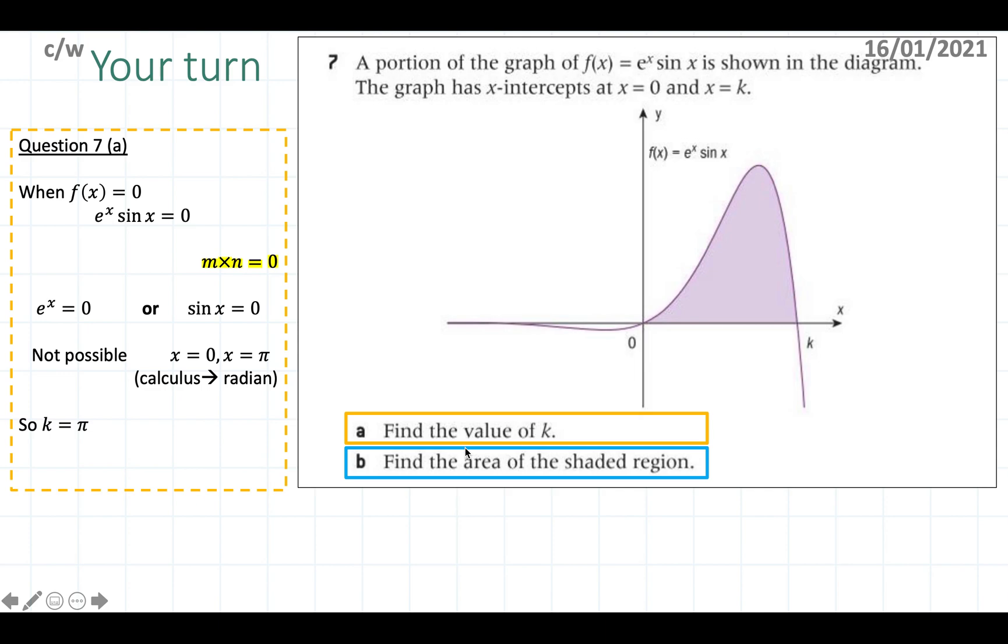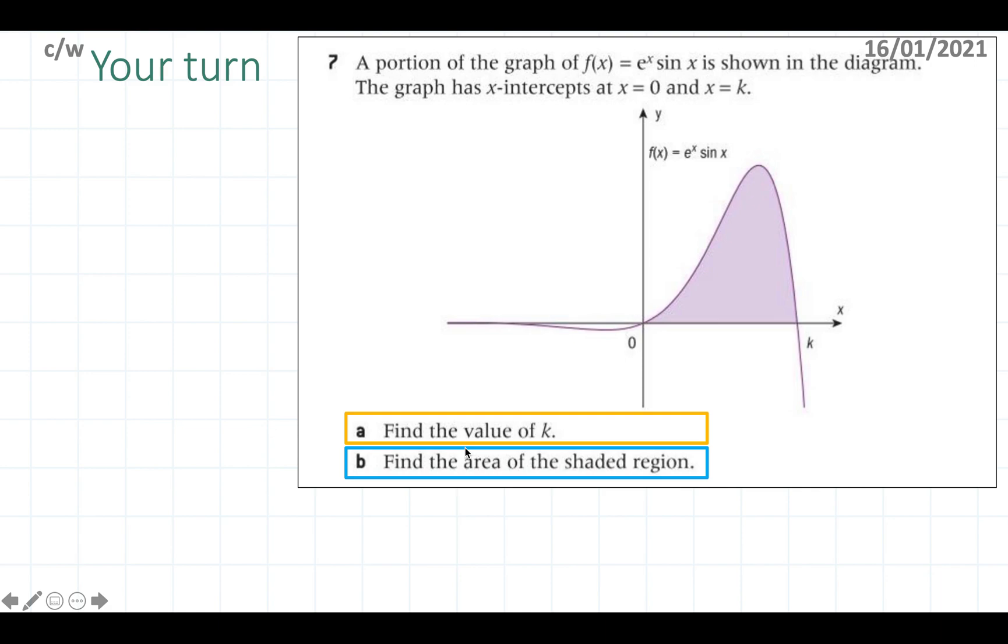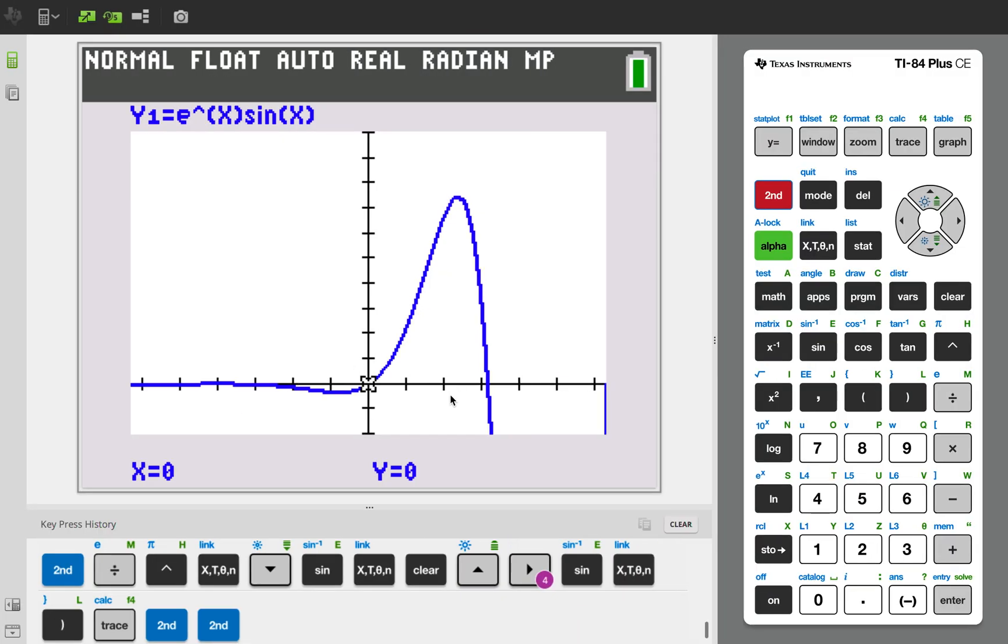It means that, and keep in mind that we're dealing with calculus so we have to use radians, k is equal to π for part a. Then part b asks you for the area of the shaded region. So all you have to do is find the area under the curve from 0 until π. Now integrating this is a bit more advanced, so you'll have to use the GDC for this. I'm just going to show you how.